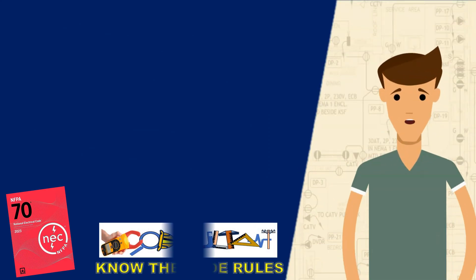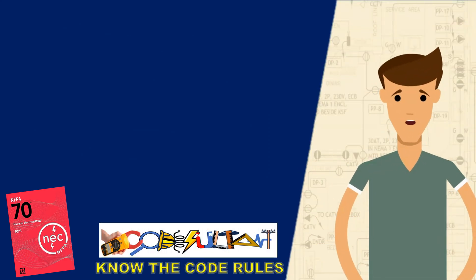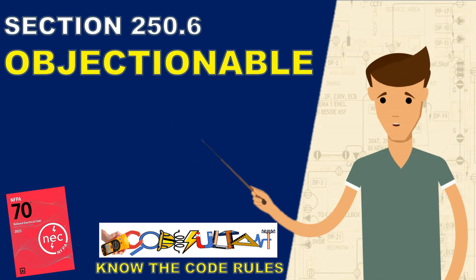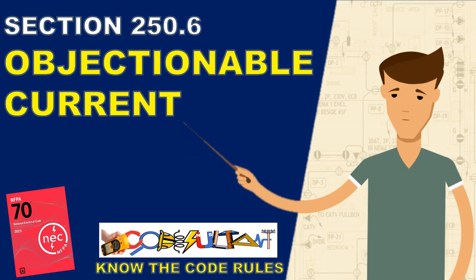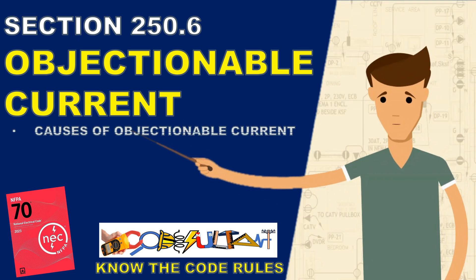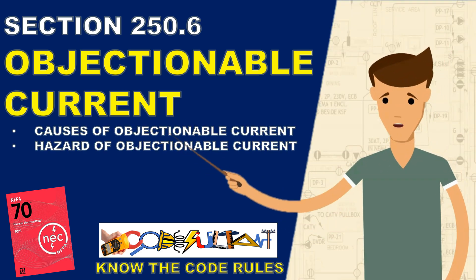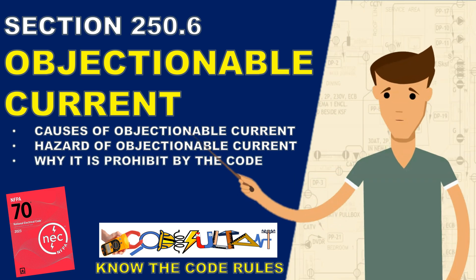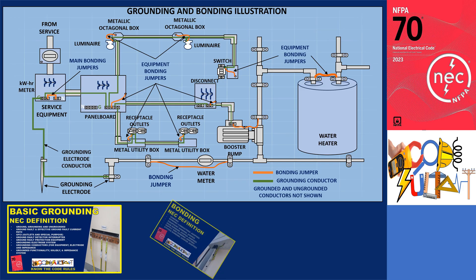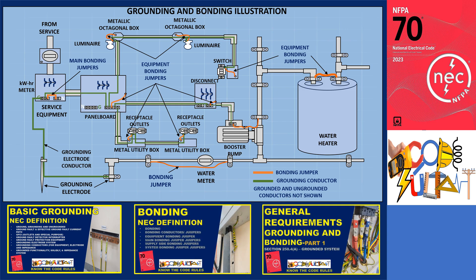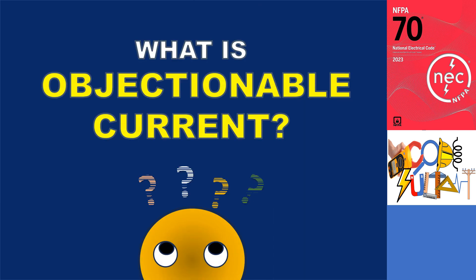Hello everyone, welcome once again to the Codesultant channel. Our discussion is about objectionable current stated in section 250.6 of the electrical code. It is important to understand the causes and hazards of objectionable current and why the code prohibits it. In previous videos, we have discussed various concepts related to grounding and bonding, but objectionable current was not explicitly defined in the code. So, what exactly is objectionable current? Let's delve into this topic and explore its implications.